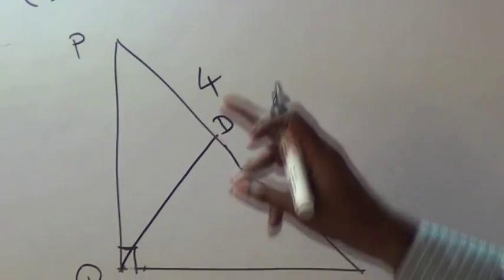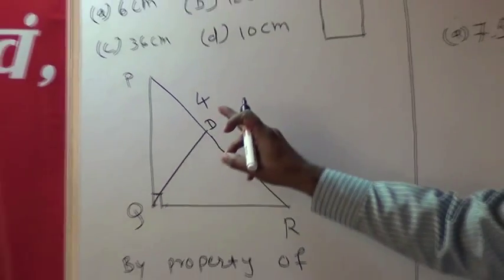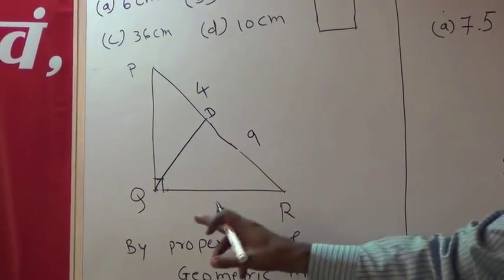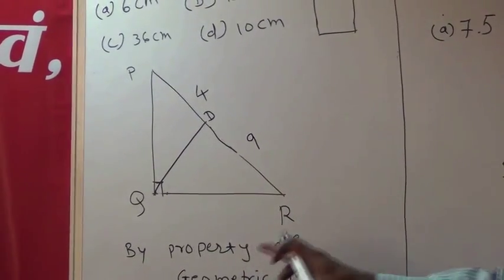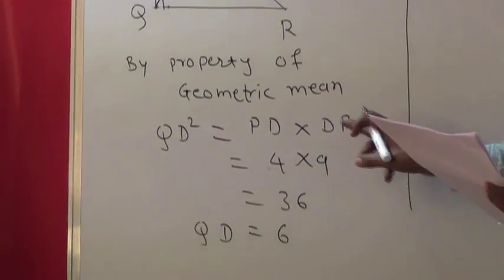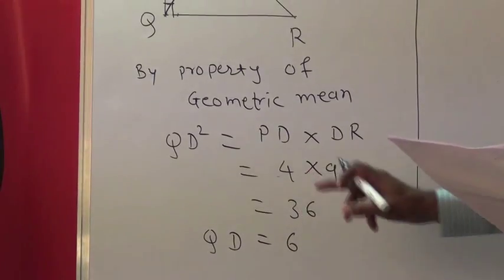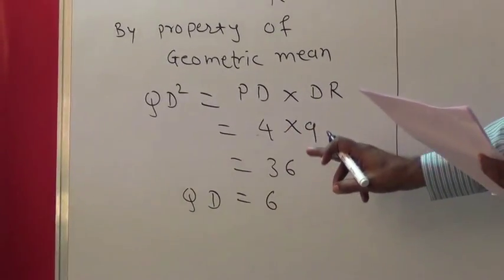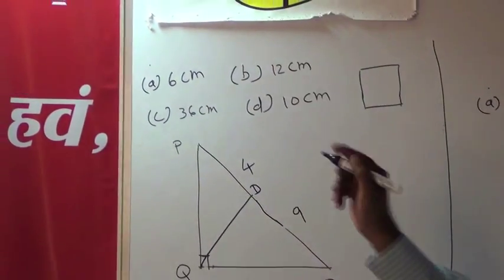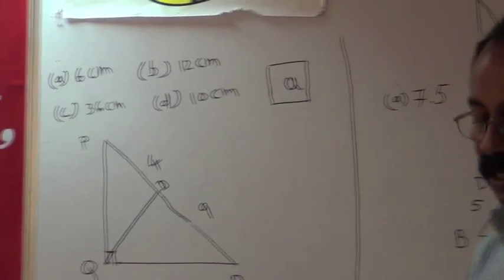From the given description, the diagram is drawn. QD is the geometric mean and PR is the hypotenuse. By the property of geometric mean, QD² = PD × DR = 4 × 9 = 36, so QD = 6 cm. Alternative A represents the answer 6 cm, so A is the correct alternative.